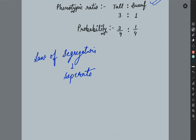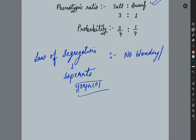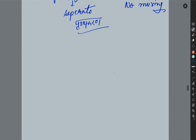We call it segregation, not just separation in Hindi. The law of segregation says that alleles are separated, and what happens is that there is no blending — no blending, or we can say no mixing. It is not that there will be some intermediate type. No mixing, no blending means that each allele retains its own identity.